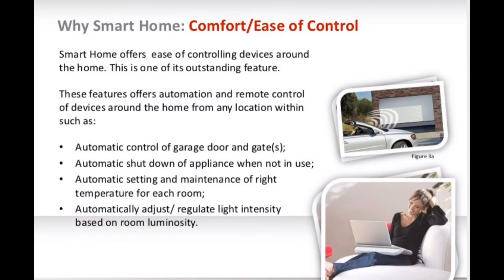Let's go through the example of comfort and ease of control. Smart home offers ease of controlling devices around the home, which is one of its outstanding features. These features offer automation and remote control of devices from any location, such as automatic shutdown of appliances when not in use, automatic setting and maintenance of the right temperature for each room, automatic control of garage doors and gates, and automatically adjusting and regulating light intensity based on room luminosity.